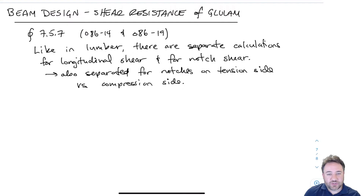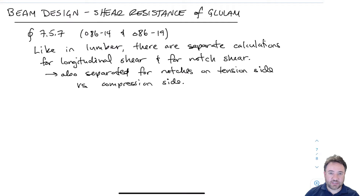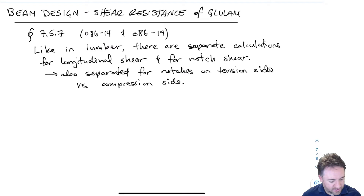The other difference in glulam is that for notch design there are two separate checks: one for if there's a compression side notch, which is usually the top of the beam notch, and a different one for tension side notch. The compression side notch is actually a longitudinal shear resistance, and the tension side notch is a fracture shear resistance, like it was for lumber.